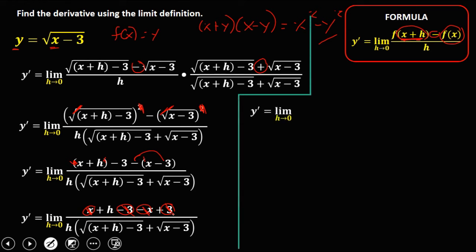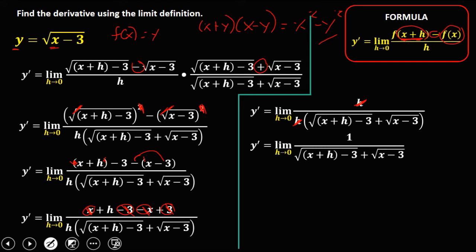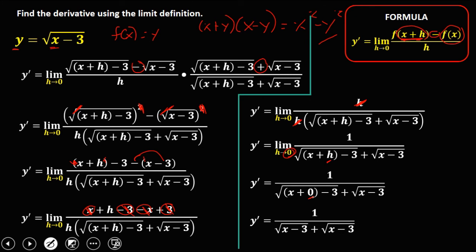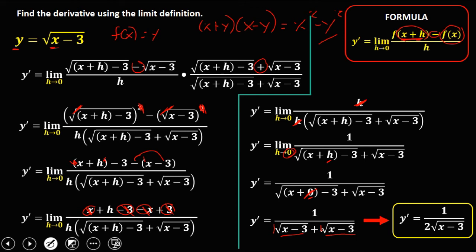So y prime equals the limit as h approaches 0. The numerator is h; copy the denominator. We can cancel the h. So we have 1 over the square root of x plus h minus 3, plus the square root of x minus 3. Now substitute 0 for h: x plus 0 gives x minus 3, plus x minus 3. Since both terms are the same, adding them gives 2 times the square root of x minus 3. Therefore, y prime equals 1 over 2 times the square root of x minus 3.